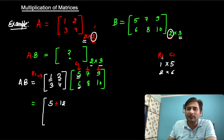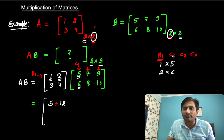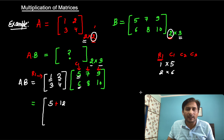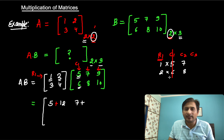Now this row 1 again, multiplied with column 2. Column 2 is 7, 8. So row 1 again: 1×7 = 7, plus the second element multiplied with 8 — 2×8 = 16. So 7+16 = 23.